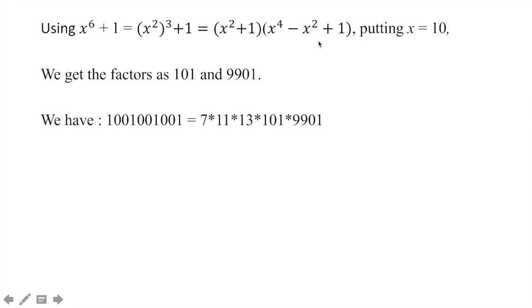So in totality, we have 5 prime factors: 7, 11, 13, 101 and 9901.